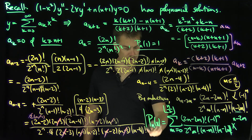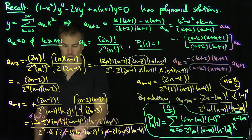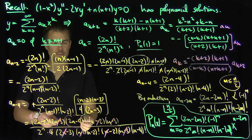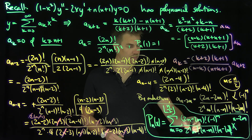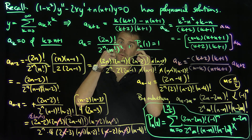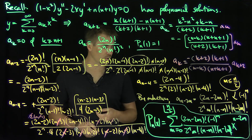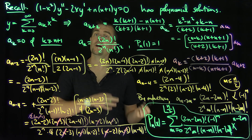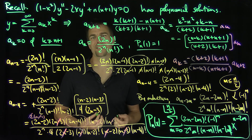That is the closed-form expression for the Legendre polynomial of degree n derived using this induction. To complete the induction, one pulls out the factors of (2n-2m) and (2n-2m+1), and the extra factor of m goes to the denominator from the m factorial. In further videos, we'll use this formula together with the Rodrigues formula to prove orthogonality of the Legendre polynomials on the interval [-1, 1] with respect to the ordinary Lebesgue measure. Thank you very much.